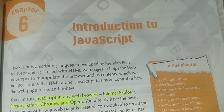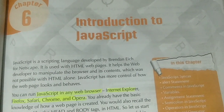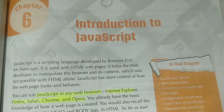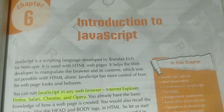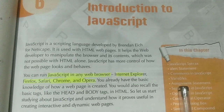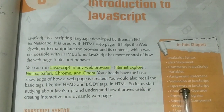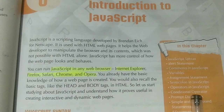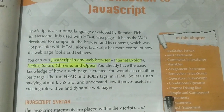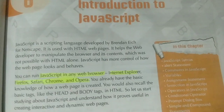Hello students, so today let us start Chapter 6: Introduction to JavaScript. In this chapter, we will be learning about JavaScript syntax, alert statement, comments in JavaScript, variables, assignment statement, semicolon in JavaScript, operators in JavaScript, conditional operators, prompt dialog box, simple and compound statements, if statement, and switch statements. So let us start our chapter.